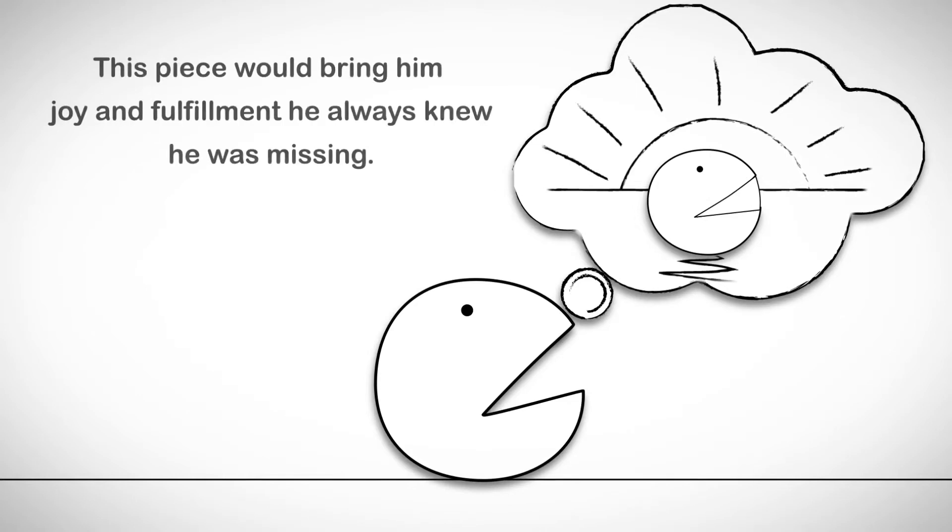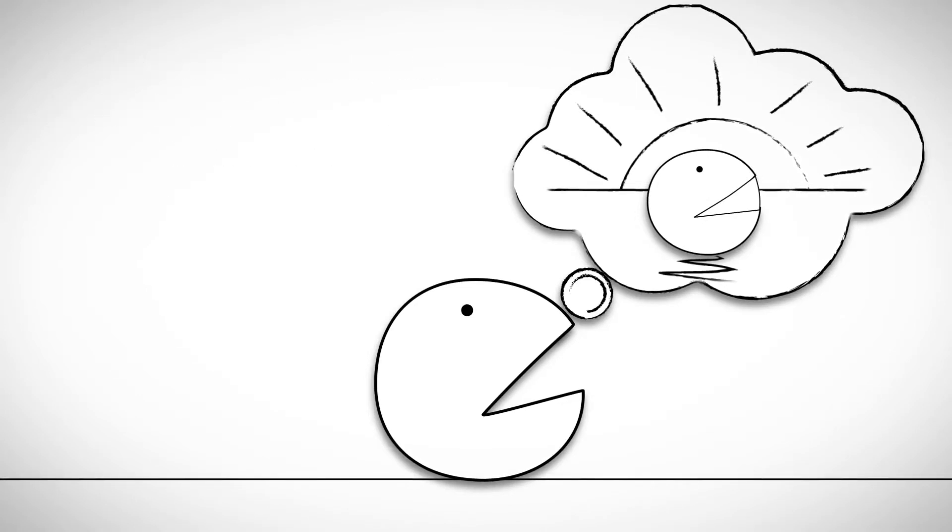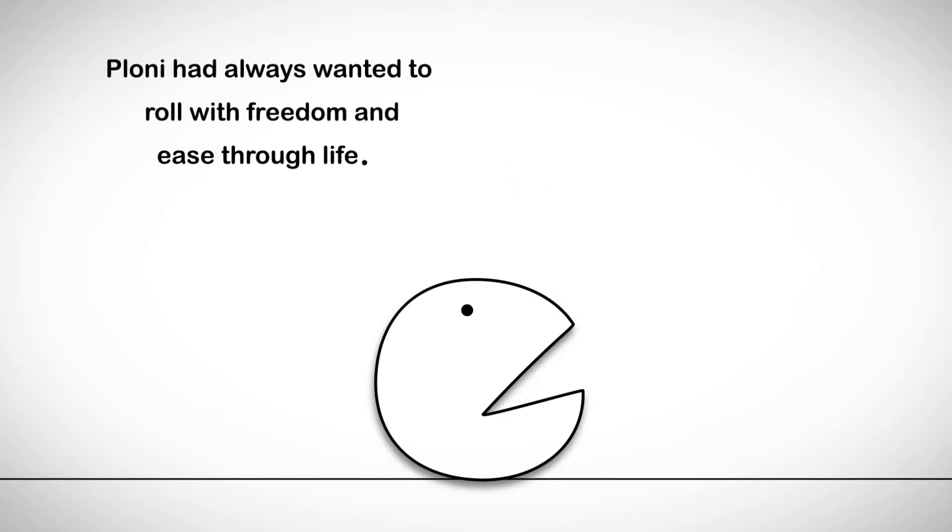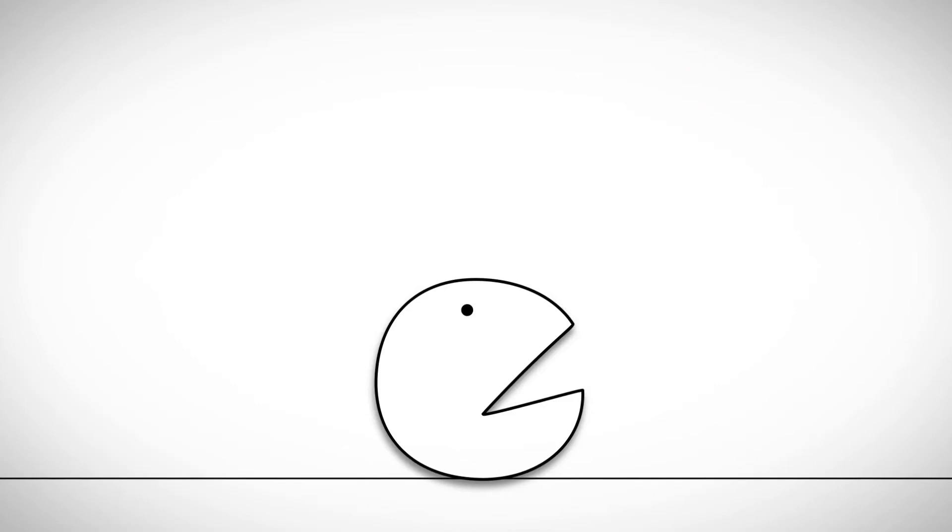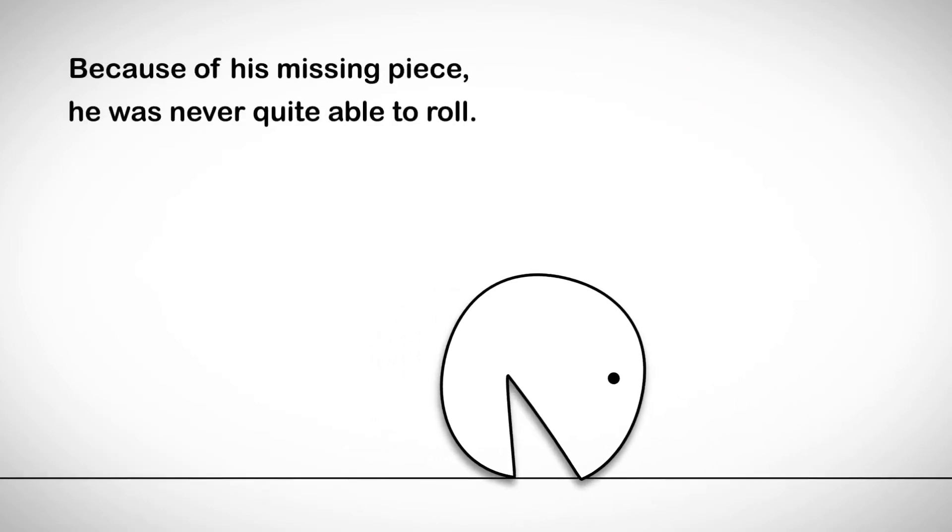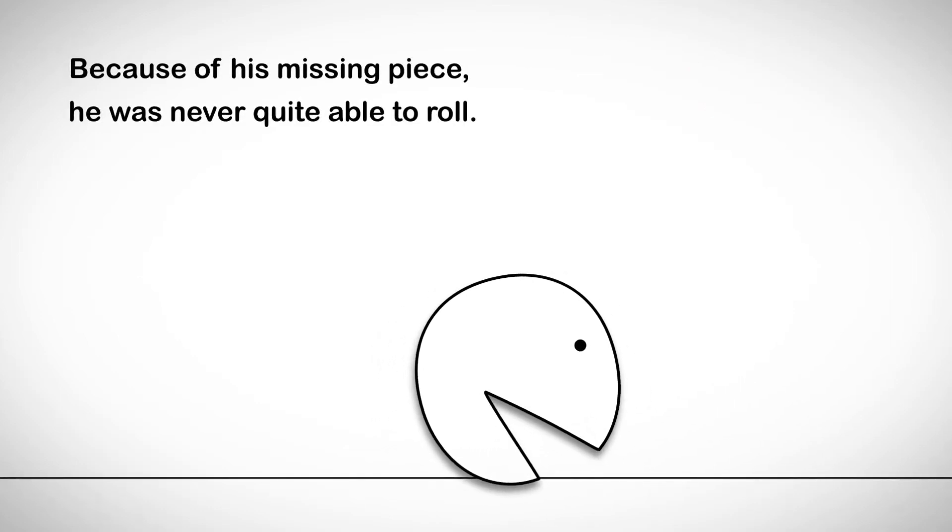This piece would bring him the joy and fulfillment he always knew he was missing. You see, Plony had always wanted to roll with freedom and ease through life. But because of his missing piece, he was never quite able to roll.